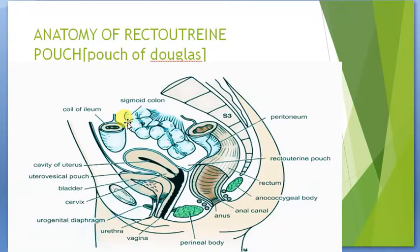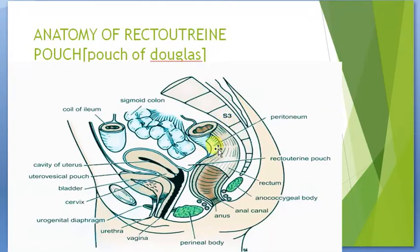Here we see the sigmoid colon with its mesentery, which we call the sigmoid mesocolon. Then we have the coils of the ileum. We also see the sigmoid colon and the rectum. Because the rectum has no mesentery, it is present posterior to the parietal peritoneum. Here we see these structures — this is actually the medial section of the lower pelvic cavity.